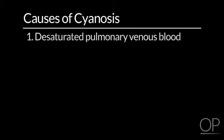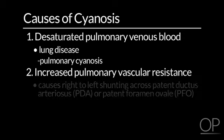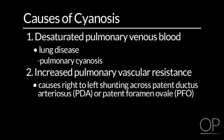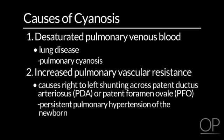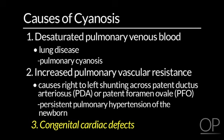There are basically three fundamental causes of cyanosis. The first is desaturated pulmonary venous blood — that is to say, lung disease — which I'll refer to as pulmonary cyanosis. The second cause is increased pulmonary vascular resistance causing right-to-left shunting across a patent ductus arteriosus or patent foramen ovale in the atrial septum, seen in babies, known as persistent pulmonary hypertension of the newborn. The third cause, of course, is certain forms of congenital cardiac defects, and we will focus primarily on that for today's lecture.